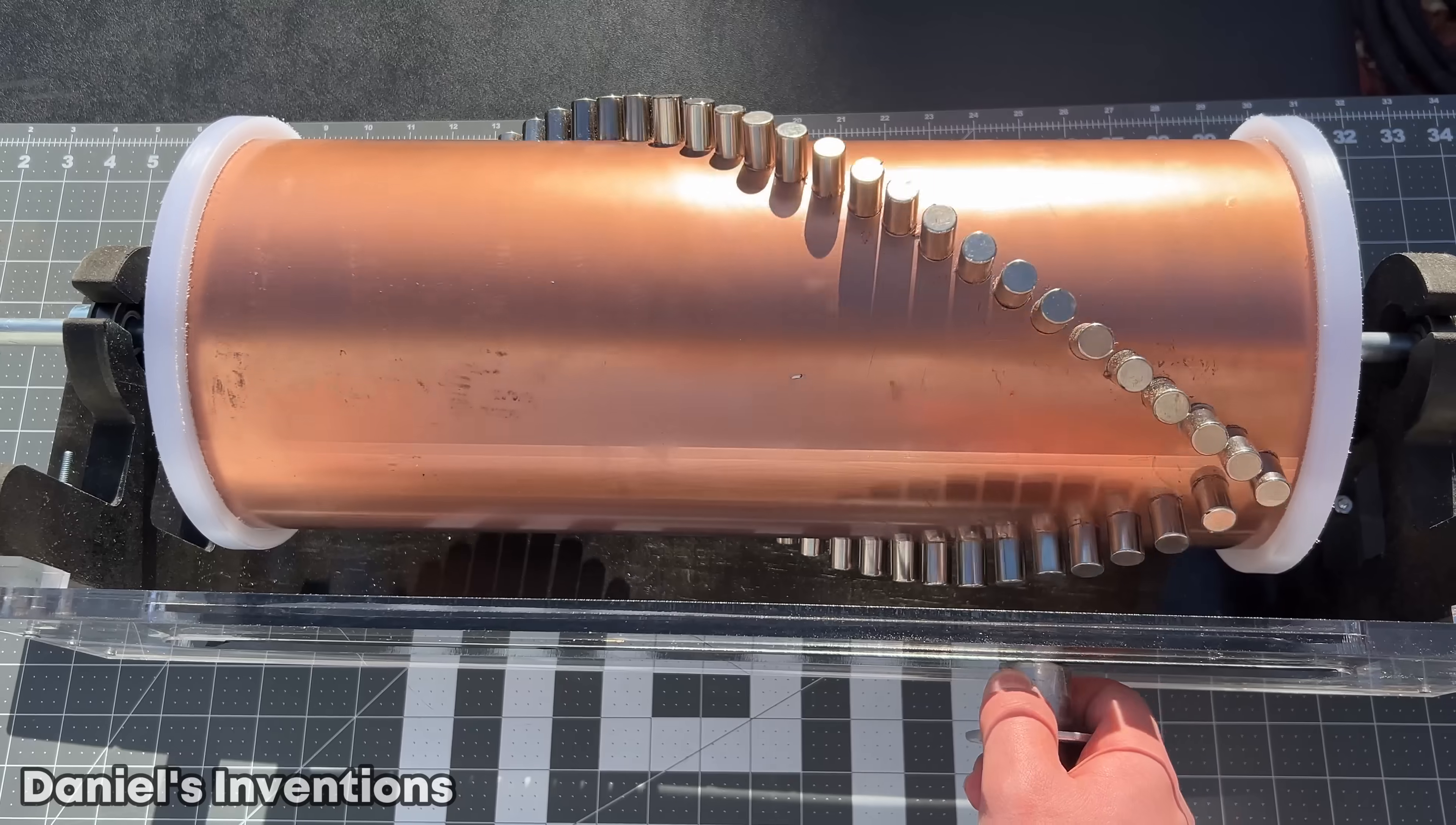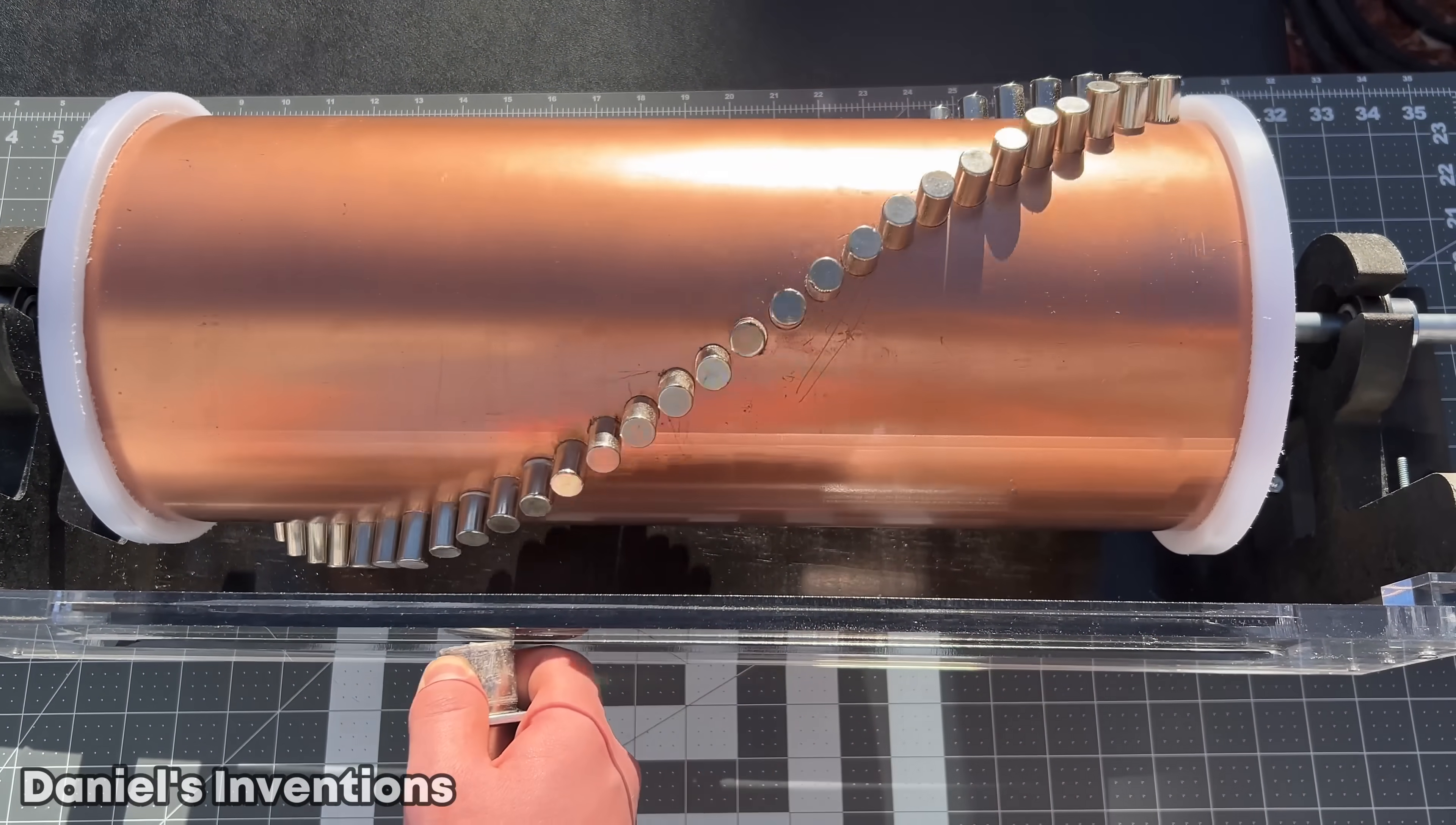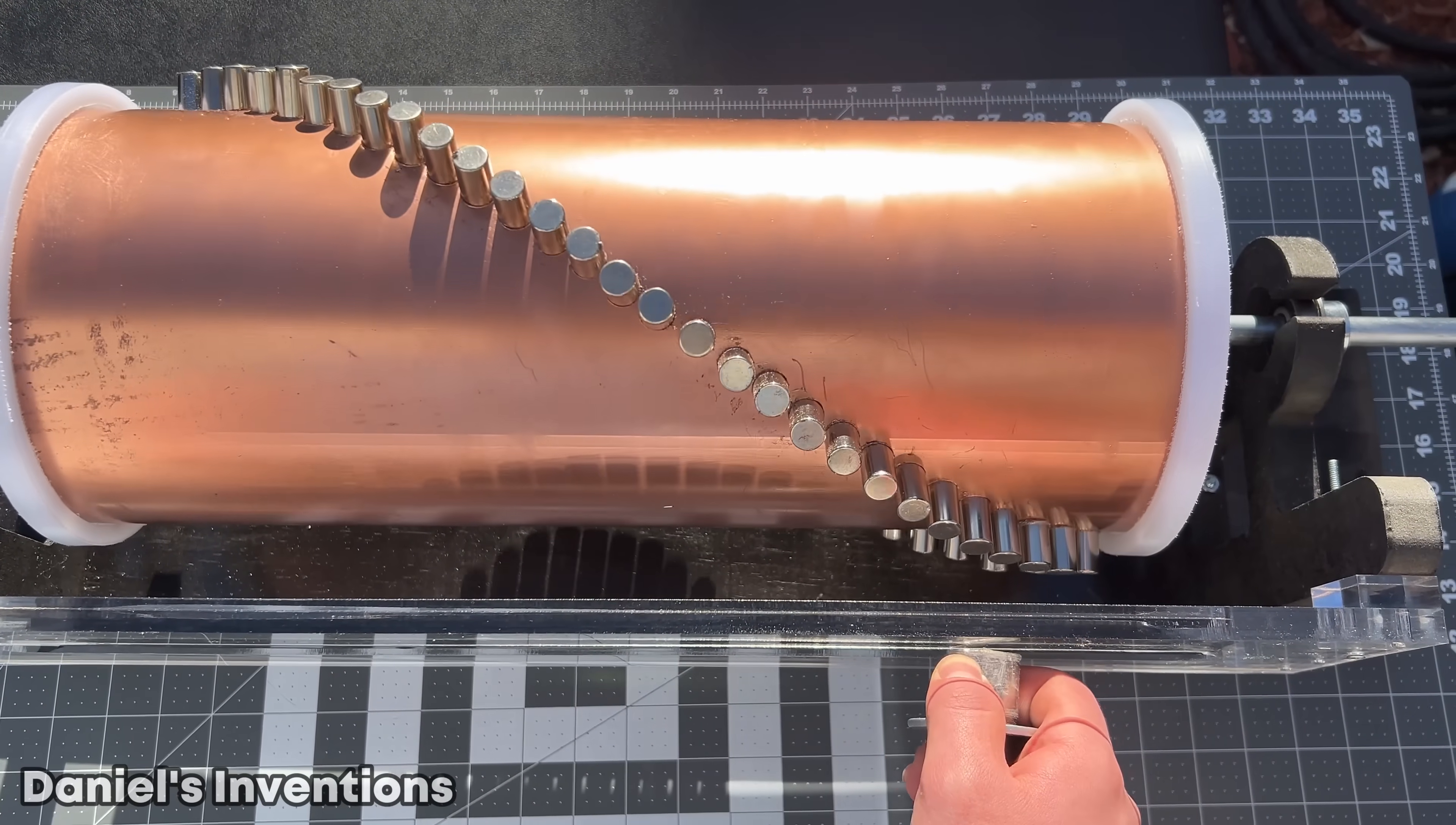This test shows that in attraction mode, the array of permanent magnets on the rotor follow the single actuator magnet on the stator. This shows that they are magnetically coupled.